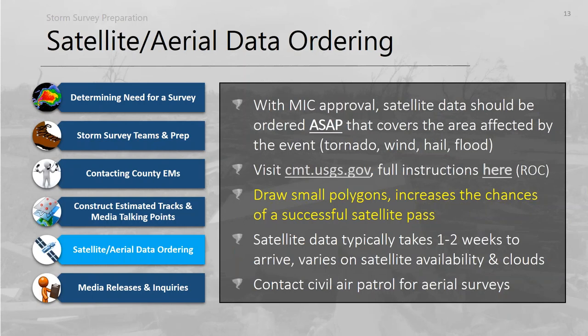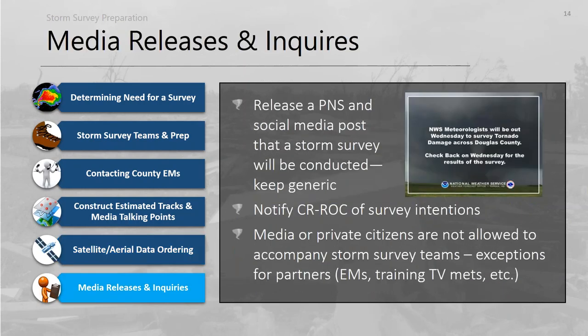When ordering satellite data, draw as small a polygon as possible on the map to increase your chances of a successful satellite pass, since the images are very large in data but their footprint is relatively small. Satellite data typically arrives in one to two weeks, so get the request in as soon as possible. Finally, release a statement for media and notify the ROC about survey intentions.